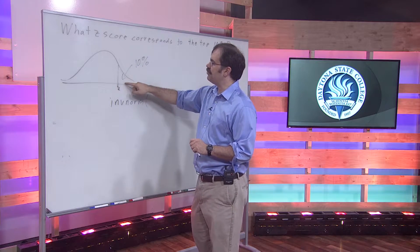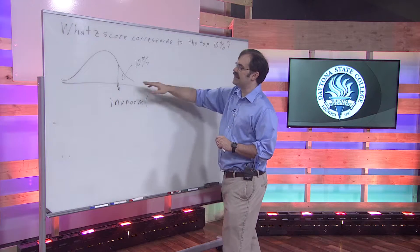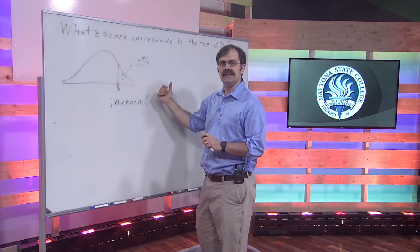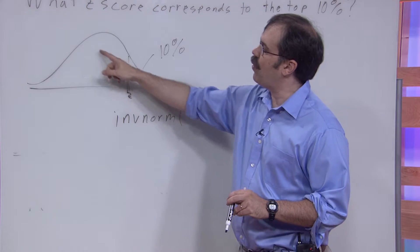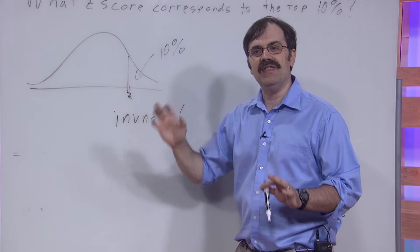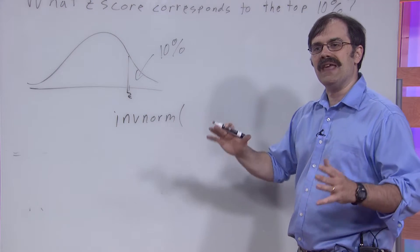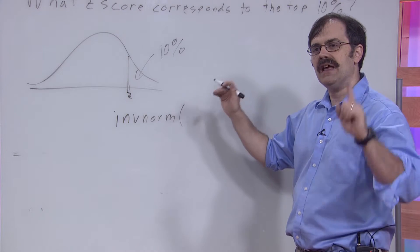If we have this with 10% on the top, 10% to the right, what you have to do is figure out what is this area to the left. And the trick here is, remember, the area under the entire curve is 1.